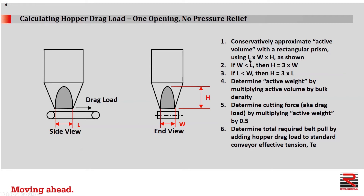We use L times W times H as shown below. If the width is smaller than the length, we set the height equal to 3 times the width. If the length is smaller than the width, then we set the height to 3 times the length. We can now determine the active weight by simply multiplying the active volume by the bulk density. Once we calculate that force, we can determine the cutting force — the drag load — by multiplying the active weight by 0.5.